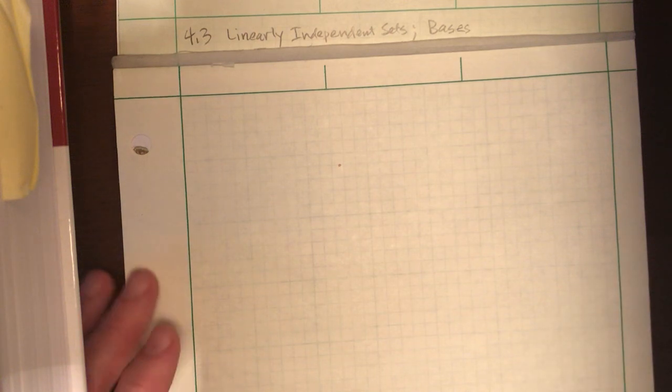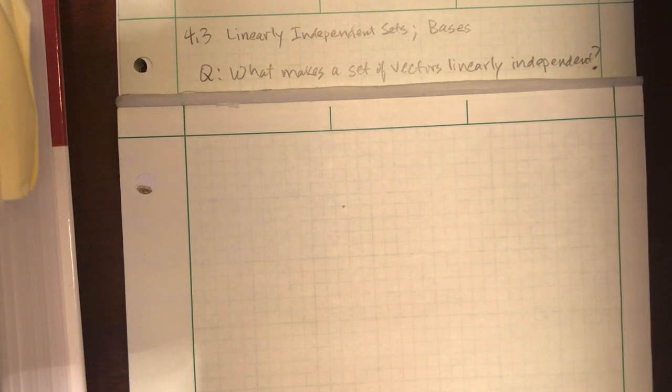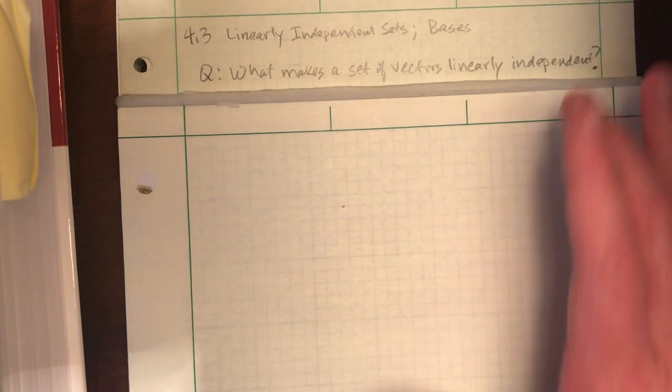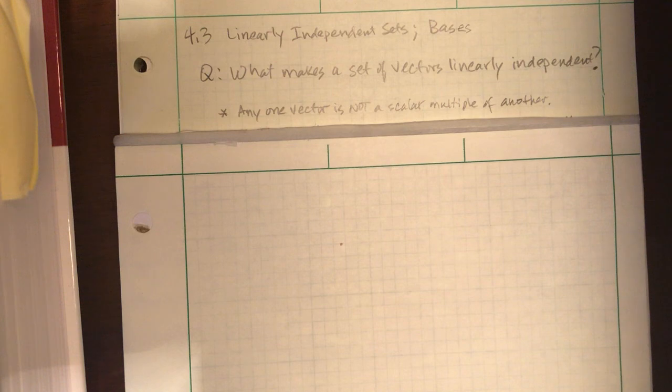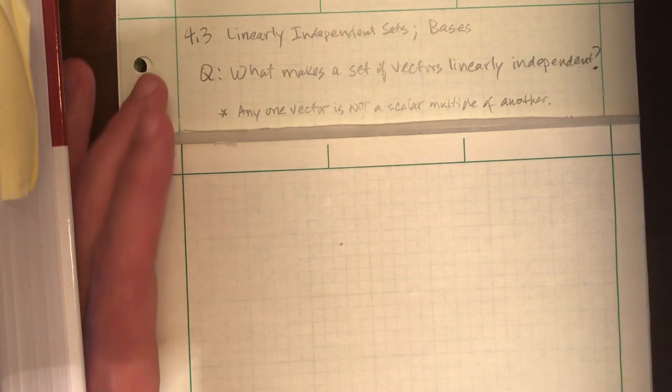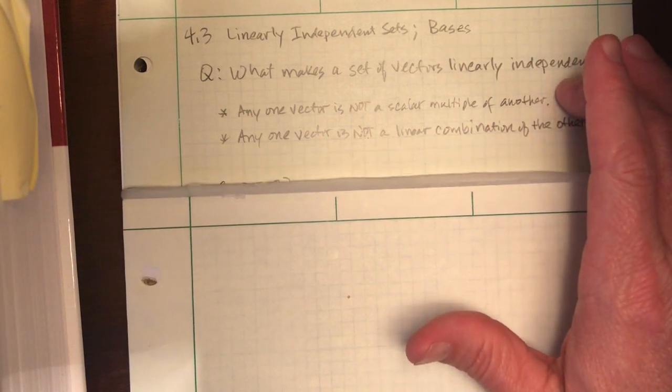Let's remind ourselves what we mean by linearly independent. What makes a set of vectors linearly independent? Well, the first thing we look for is the easy one: if you notice one vector is a scalar multiple of another one, then it's dependent. So any one vector is not a multiple of another keeps it independent. But sometimes that's easy to check if there's just two vectors. So a better condition is that any one vector is not a linear combination of the others. Let's look at a few examples to kind of get this back in our head.